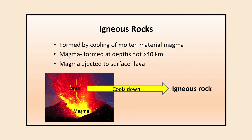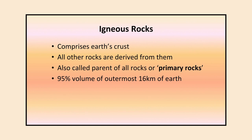Igneous rocks are formed by cooling of molten material called magma. When magma is deep-seated inside the Earth it is known as magma, and when it comes out of the Earth's surface it is known as lava. Lava cools down and forms igneous rocks. Magma is formed around 40 kilometers deep inside the Earth. Igneous rocks are also known as the parent of all rocks or primary rocks, and 95 percent of the outermost 16 kilometers of the Earth is made up of igneous rocks.